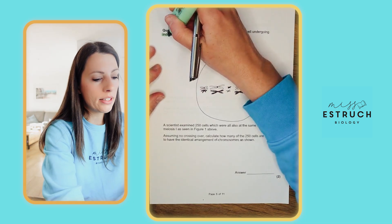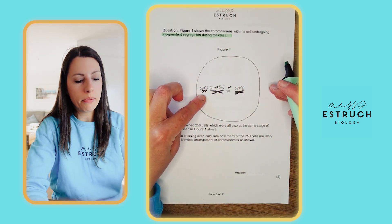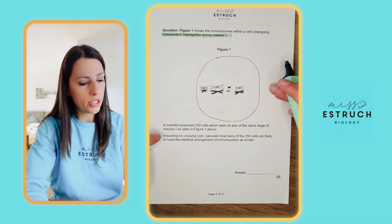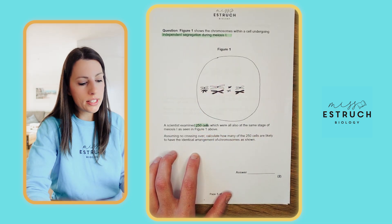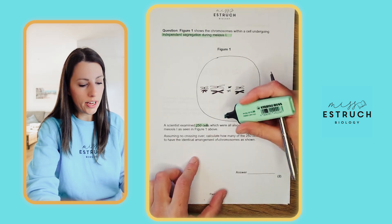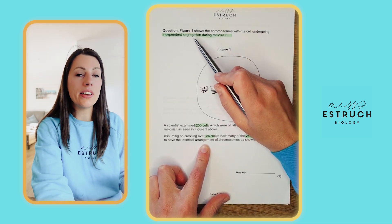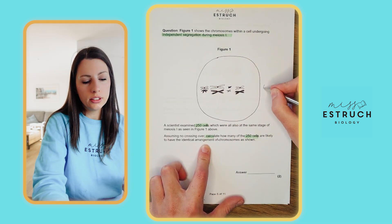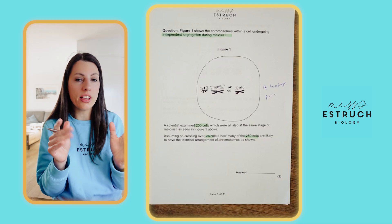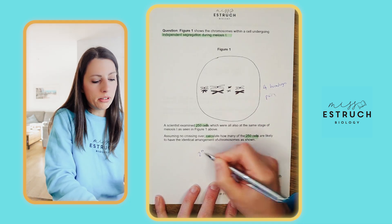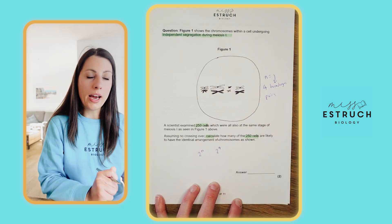Next question: Figure one shows chromosomes in a cell undergoing independent segregation during meiosis 1. We can see homologous pairs lined up at the equator, with maternal and paternal chromosomes shown as white or black. A scientist examined 250 cells at the same stage. Assuming no crossing over, calculate how many of the 250 cells would look identical to the one shown.